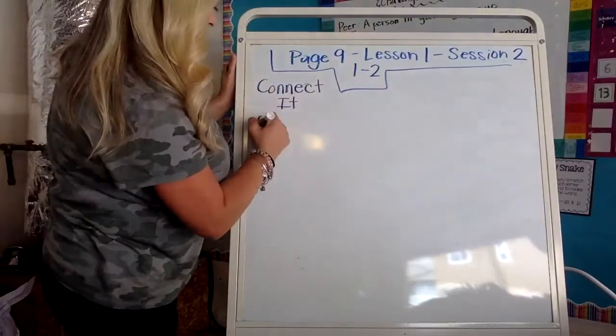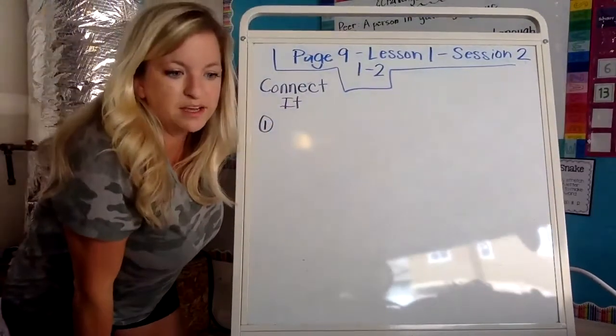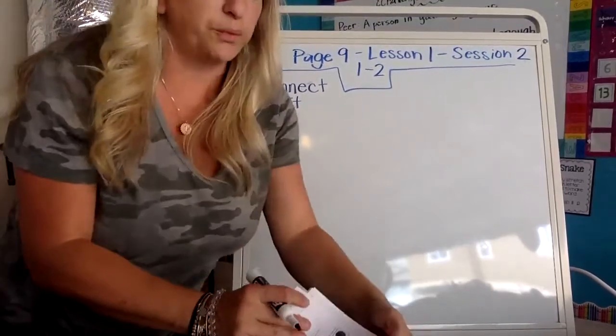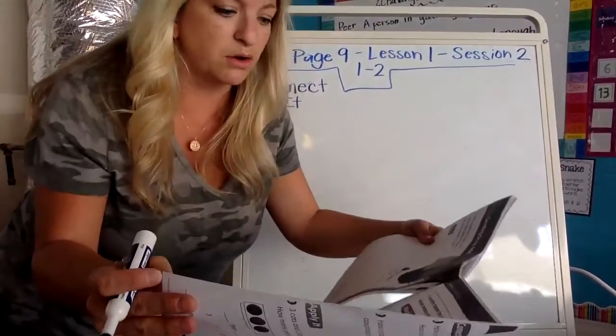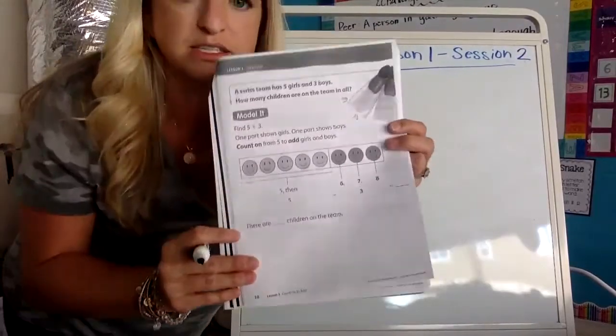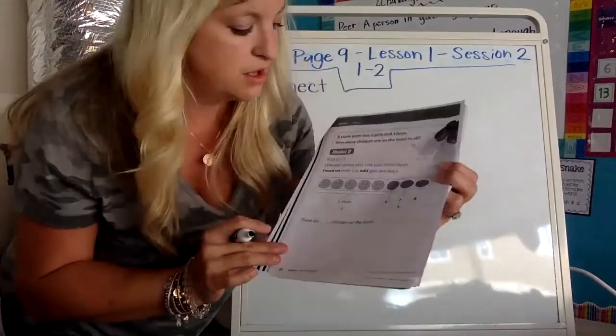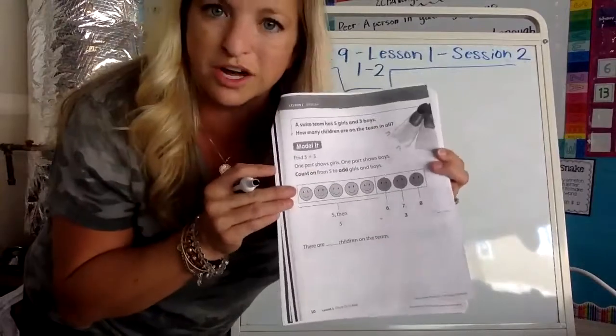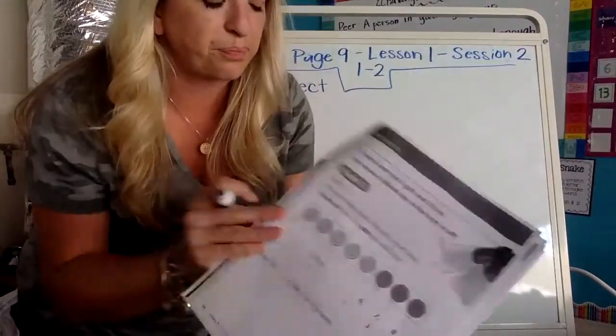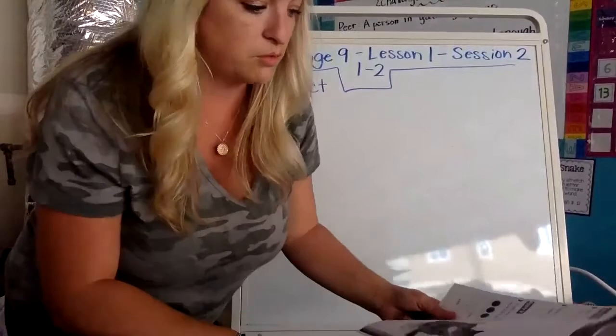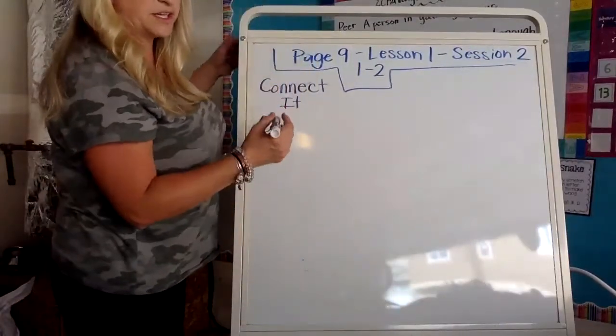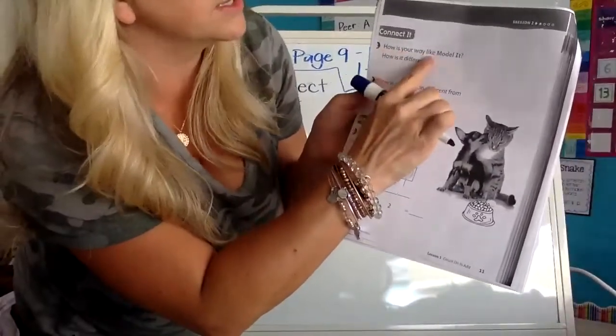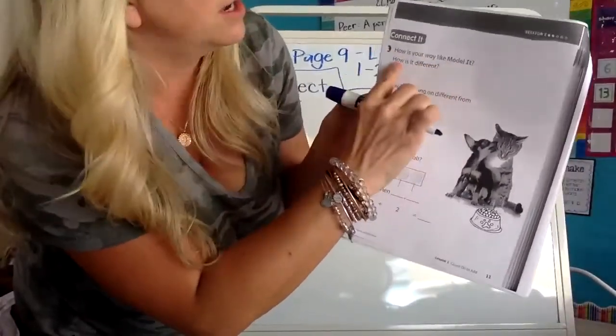So now I'm on page 11 in your workbook and I'm on problem number one. And at the top, it says connect it. And I have my kitty cat and the cute little doggy on the page. It says connect it. That's where we put it all together. So number one says, how is your way like model it? How is it different? So you can draw a word or a picture.